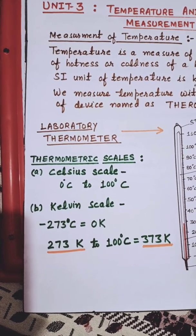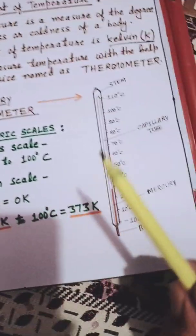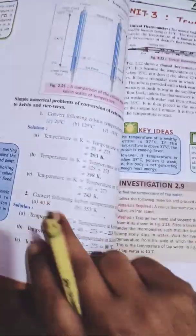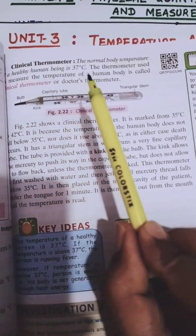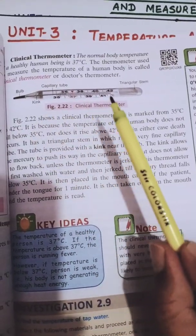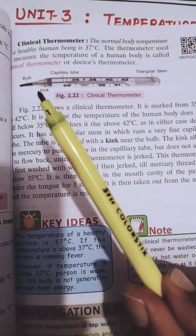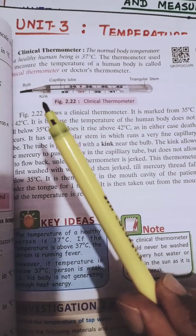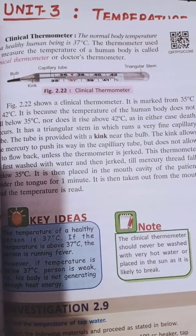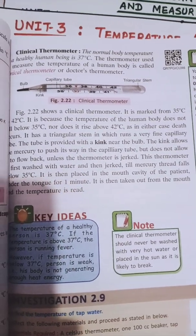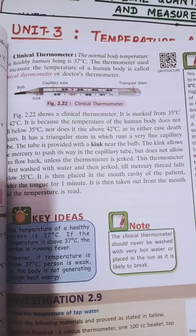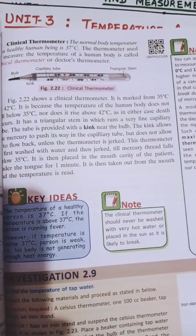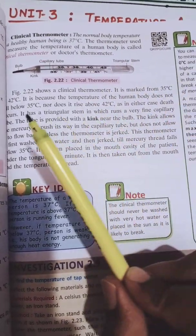Next we are going to study about the Clinical Thermometer. We have already studied the laboratory thermometer. The diagram of the clinical thermometer is given in the book. You can take out your thermometer at home — that is the clinical thermometer. We use the clinical thermometer to measure our body temperature, and we use the laboratory thermometer in physics or chemistry labs.